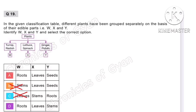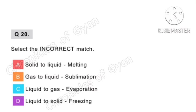Question 20. Select the incorrect match. Option A: solid to liquid is called melting. Option B: gas to liquid is called condensation. Option C: liquid to gas is called evaporation. Option D: liquid to solid is called freezing. So the incorrect match is option B — gas to liquid.